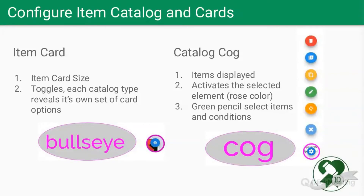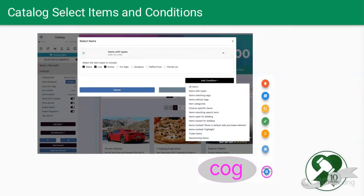For an item card it shows your item size and there are all sorts of toggles. Each catalog type reveals its own card options. For the catalog cog, it activates the selected element, shows your items that are displayed, and when you click on the cog you've got those icons on the right — your pencil, refresh, copy/duplicate, and delete buttons. On the catalog, click the cog to select the elements that will be shown and you can refine that even further with conditions.